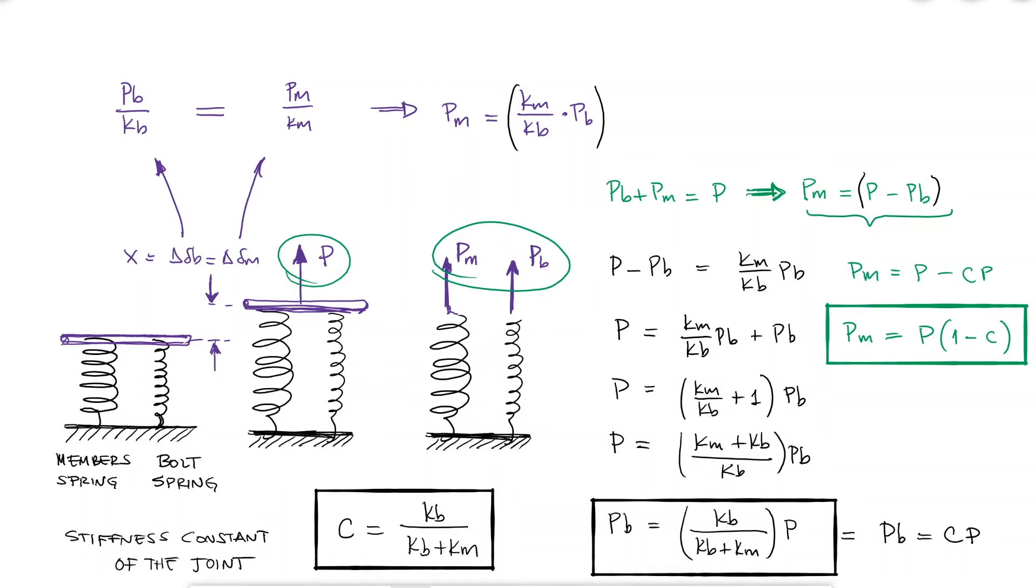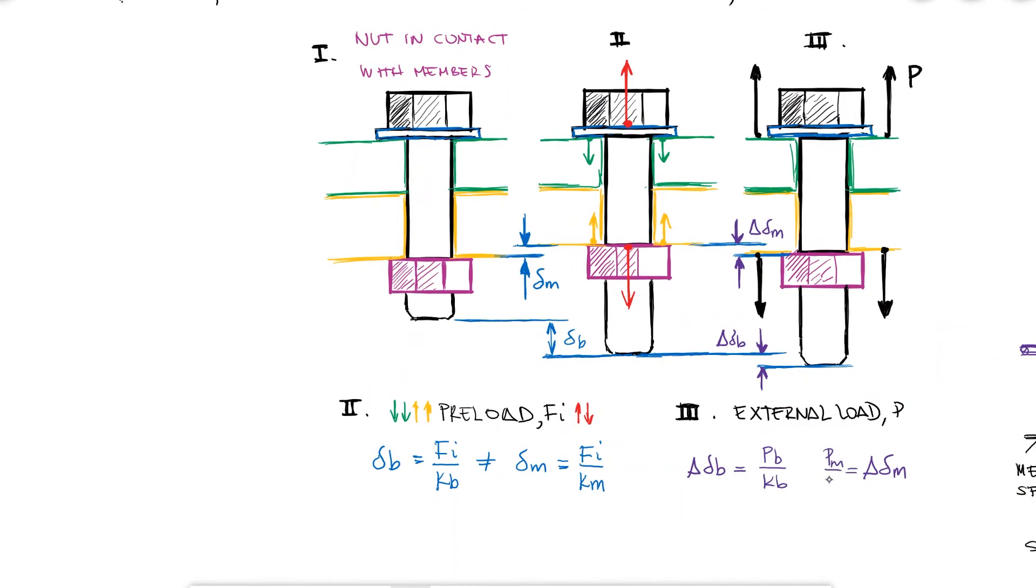Therefore, the total load that goes into the bolt is the fraction of the external load PB plus the preload Fi, and the total load that goes into the members is the fraction of the external load PM minus the preload Fi, as the preload was originally compressing the members and the external tensile load is stretching them, which means opposite signs.